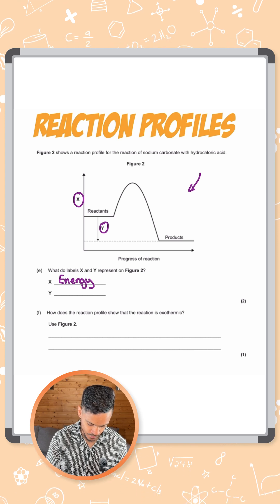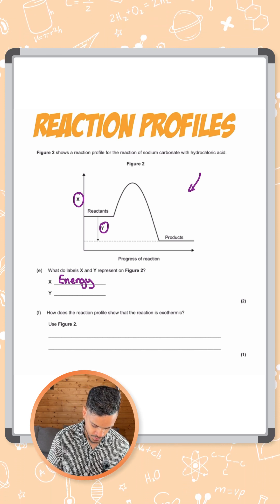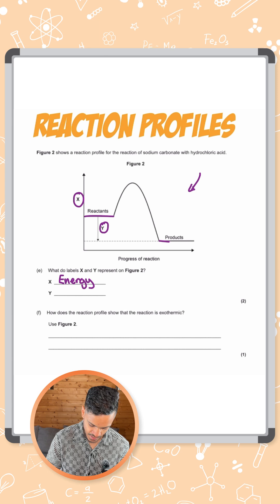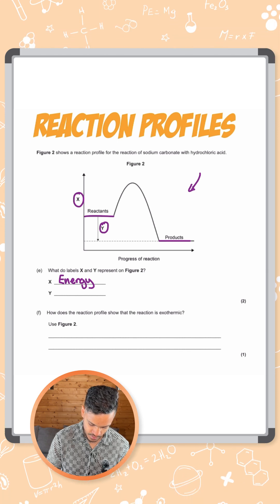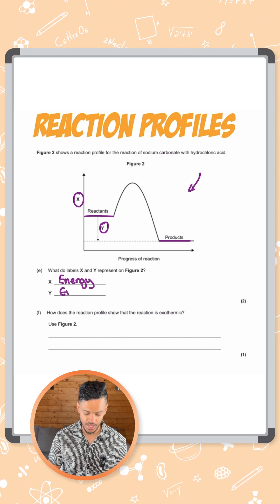Y is this label here. It's the difference between the energy of the reactants and the energy of the products. So that's actually the energy change of the reaction.